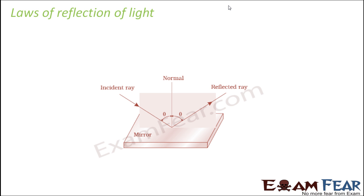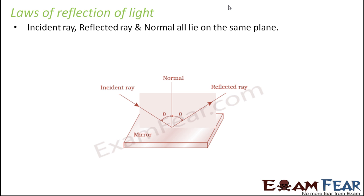Now comes the most important part: the laws of reflection of light. There are two laws of reflection. The first law states that the incident ray, reflected ray, and normal all lie on the same plane. If you are able to get all of them on the same sheet of paper, that means they are all on the same plane. Here you can see the incident ray, normal, and reflected ray are all on the same sheet of paper, so they lie on the same plane.